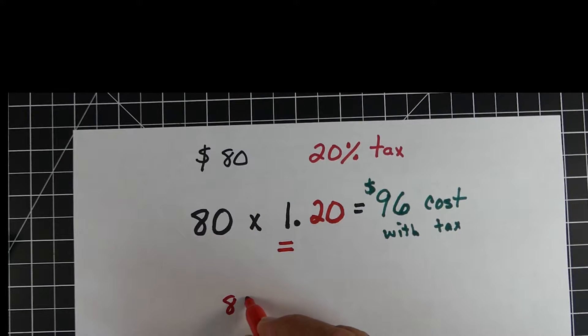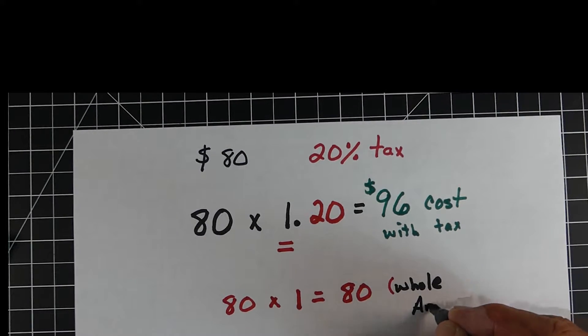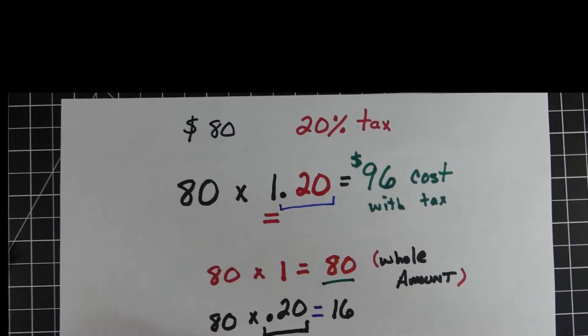Now you might ask yourself, how is this possible? So if you want to think of it this way, we know that 80 times 1 would be $80, so the whole amount. And we already know that we can take 80 times .2 and get the 16, which was the amount of tax.